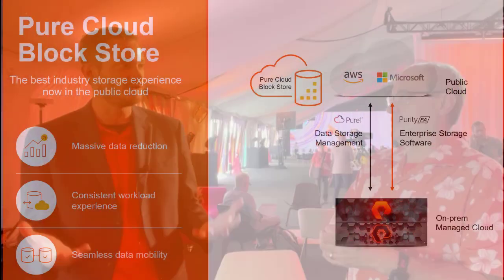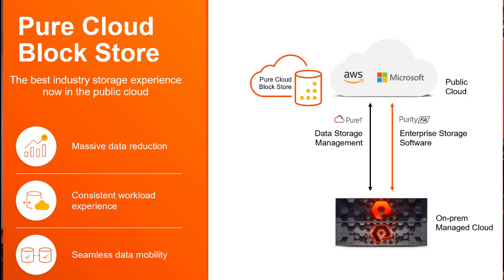The concept of data reduction and thin provisioning are actually novel in the cloud. When customers move or build applications leveraging cloud services, they realize it's expensive and hard to manage at scale. Cloud Block Store is built for that back-end infrastructure — built for AWS and Azure — taking that infrastructure and making it efficient, feature-rich, and saving money.